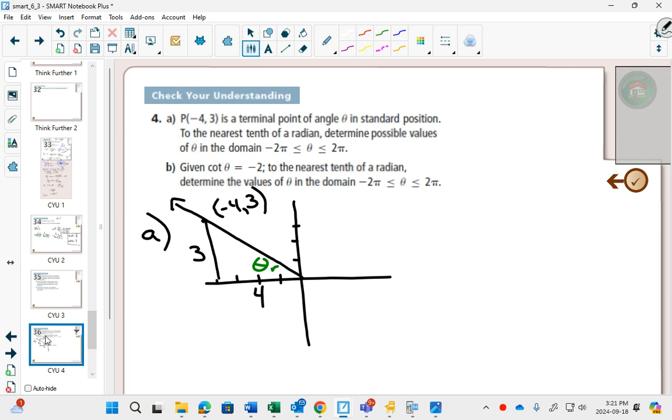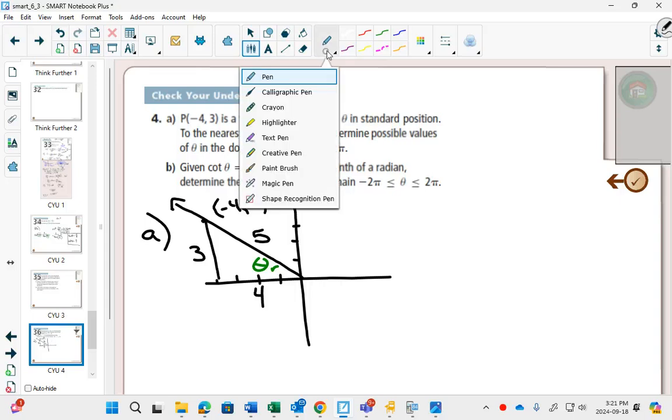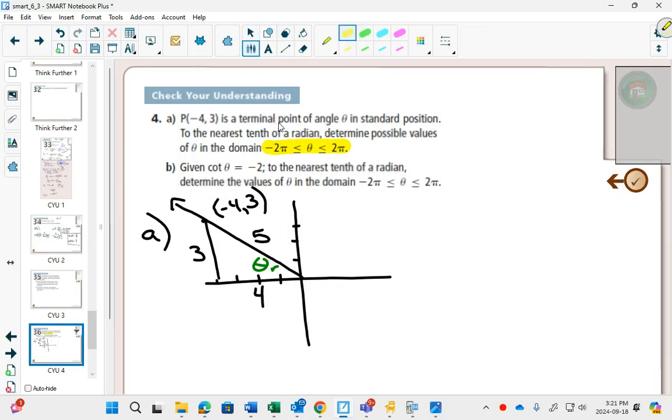One of my favorite right-angled triangles because all the numbers are nice. Three, four, five. Pythagorean triplet. Perfect. Now we have to find out what theta is from negative two pi to two pi. So this part right here is saying you have to do your work in radians instead of degrees.